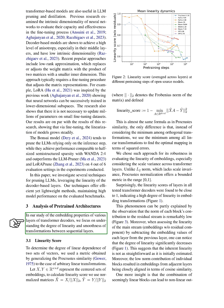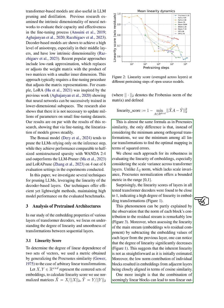In this section, we analyzed pre-trained architectures to understand the linearity and smoothness of transformations between sequential layers in transformer decoders. To measure the linearity, we introduced a linearity score metric that evaluates the linear dependence between sets of embeddings. We normalized the embeddings and calculated the linearity score based on the minimum squared error between the transformed embeddings. We found that the linearity scores of layers in transformer decoders were close to 1, indicating a high degree of linearity in embedding transformations.